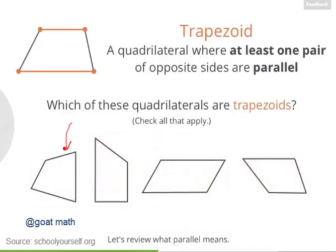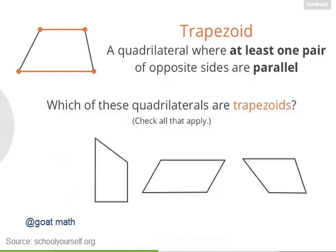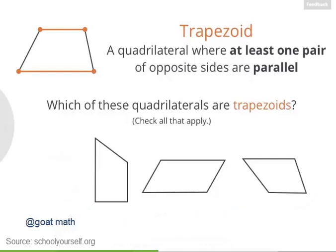In this quadrilateral, none of the sides are parallel, so it's not a trapezoid. These other quadrilaterals are all trapezoids because at least one pair of opposite sides are parallel.